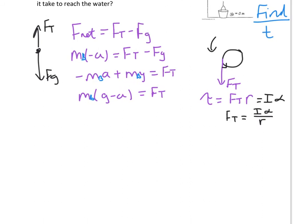Using our older stuff, we know that acceleration equals r alpha. So acceleration over r equals alpha. Substituting this in for alpha, we get Ft equals i times a over r over r. Just simplifying that a little bit, tension force equals i times a over r squared.